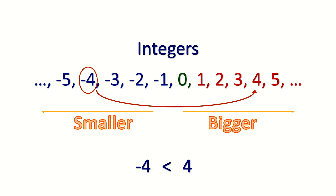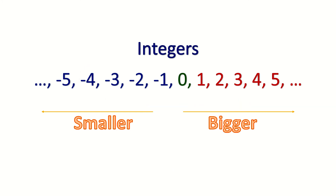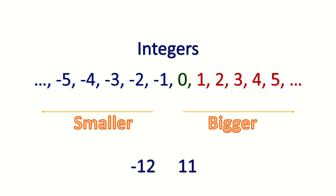Now let's look at a few examples without using the number line. Will 20 be bigger or smaller than negative 1? 20 will be bigger than negative 1. Will negative 12 be bigger or smaller than 11? Negative 12 will be smaller than 11.